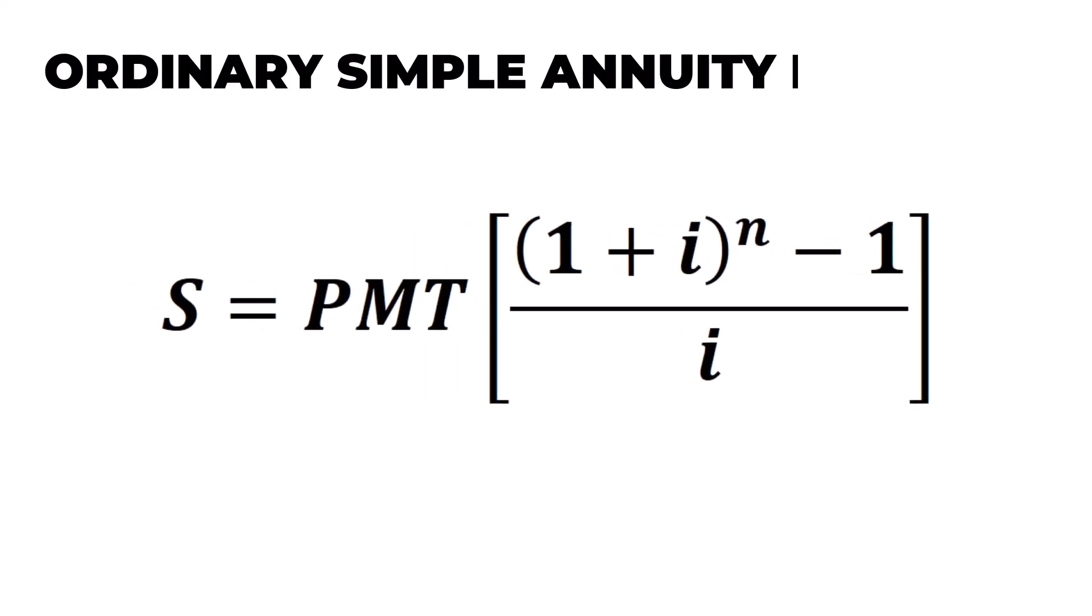The ordinary simple annuity formula is a way of calculating the accumulated value of a series of equal payments made at regular intervals. We use the word ordinary because in financial mathematics, that word is used whenever payments are made at the end of a period.